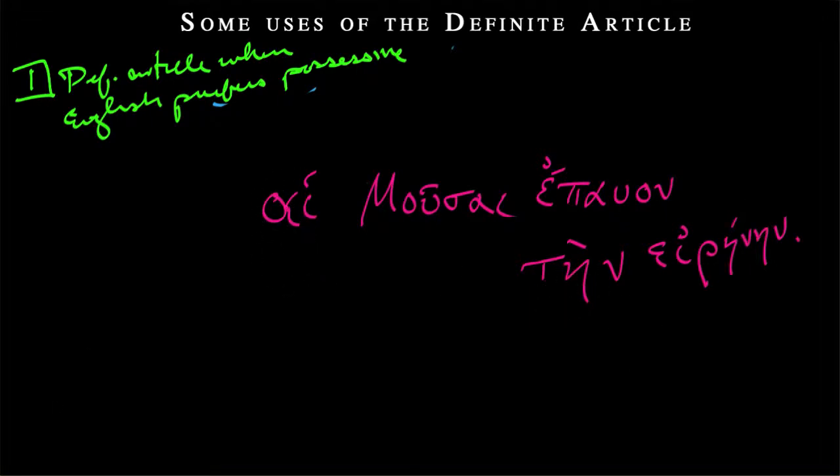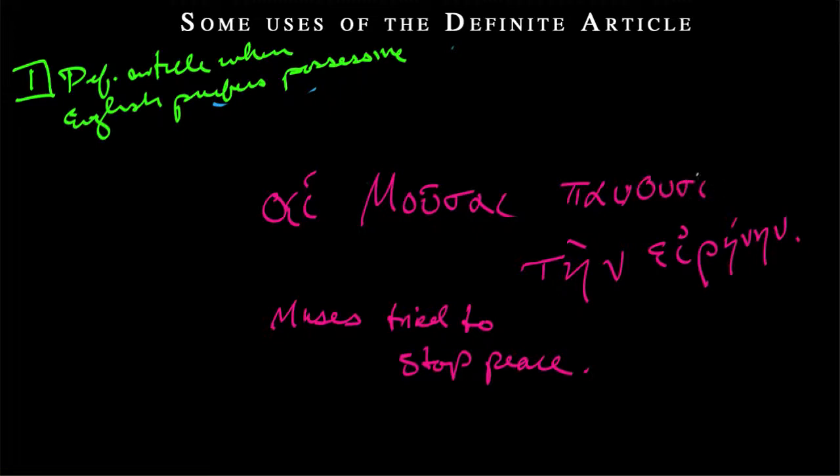But let's not say that we're talking about nine muses. We're just talking about muses in general. Muses often are putting a stop to peace in this fictional world. We might want to translate this in English simply as muses tried to stop peace. It's a little bit tricky in the past tense. I probably should have left it pausi. Muses tend to stop peace, are stopping peace. That would be this version.